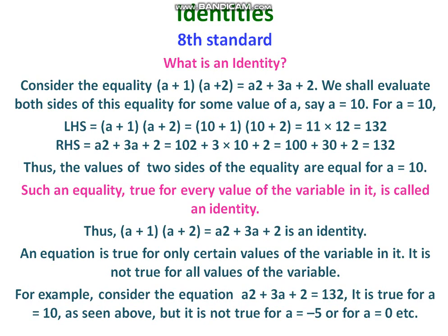Consider the equality: a into (a plus 1) into (a plus 2), that is equal to a squared plus 3a plus 2. We are finding the binomial product. Substituting the value of a as 10: the LHS is (10 plus 1) into (10 plus 2), which is 11 into 12, equal to 132. The RHS is a squared plus 3a plus 2, which gives 100 plus 30 plus 2, equal to 132.